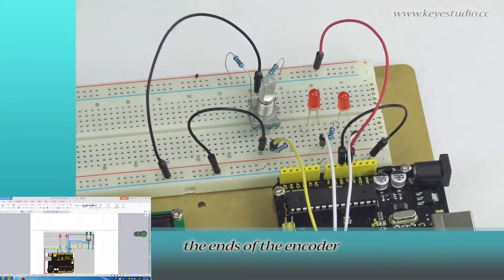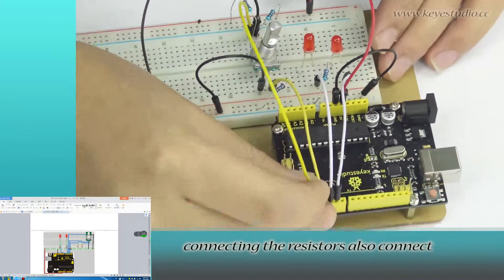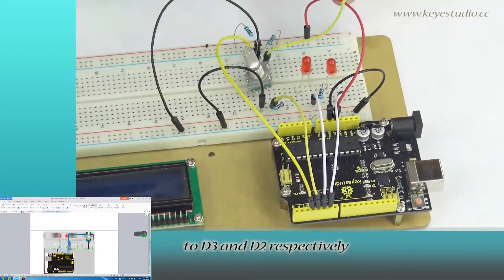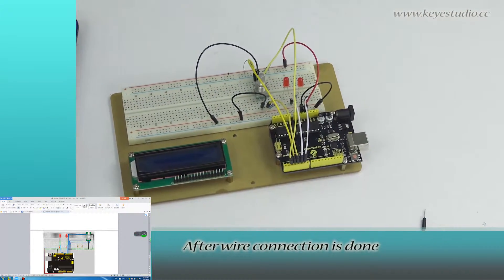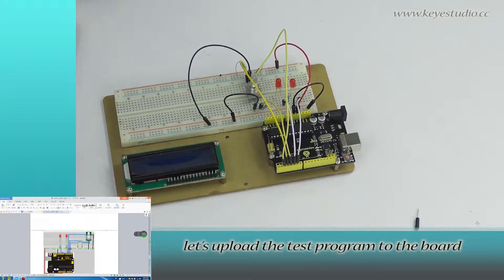The ends of the encoder connecting the resistors also connect to D3 and D2 respectively. After wire connection is done, let's upload the test program to the board.